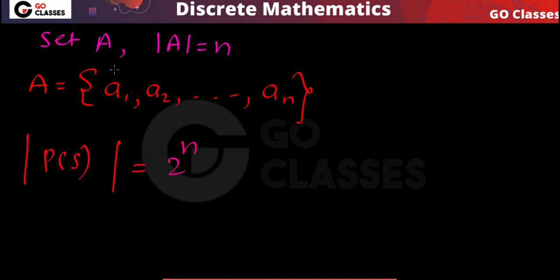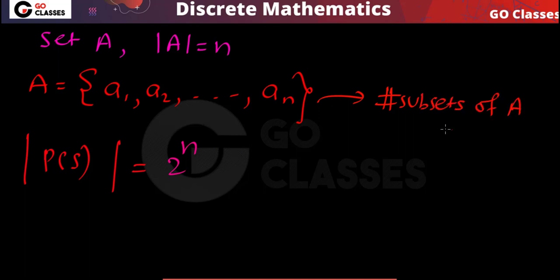The reason is simple: every element of set A has two choices when you are creating a subset. When creating a subset, every element either will be present or will not be present. So for every element you have two choices, which is why the cardinality of the power set of A is 2^n — the number of subsets of A is 2^n. The power set is a set of all subsets of A, so its cardinality is 2^n. Now, what is the cardinality of A×A?